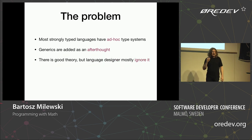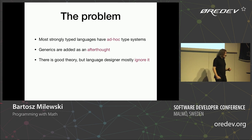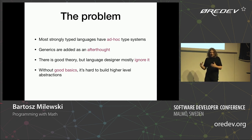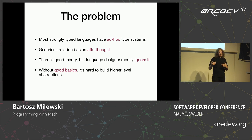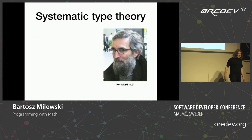But there is a good theory, and this is what I'm going to talk about. Most language designers ignore this theory because it's hard — it's abstract mathematics. My point is that without good foundations in your language, it's really hard to build higher-level abstractions that let you reuse code and write generic code so you don't have to reinvent the wheel every time. And there is a systematic type theory.